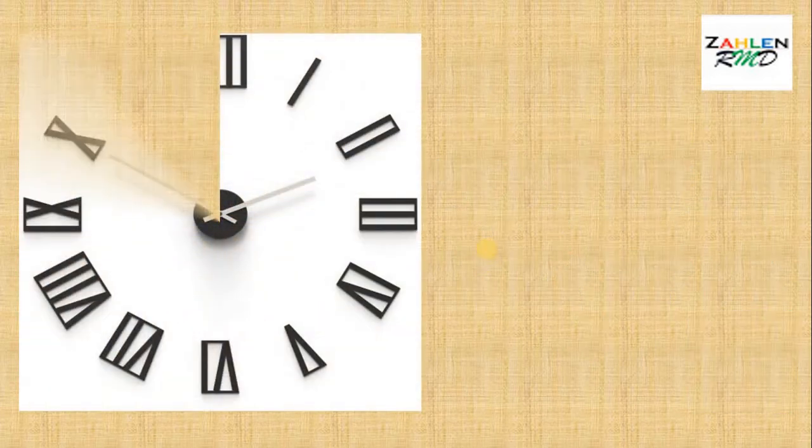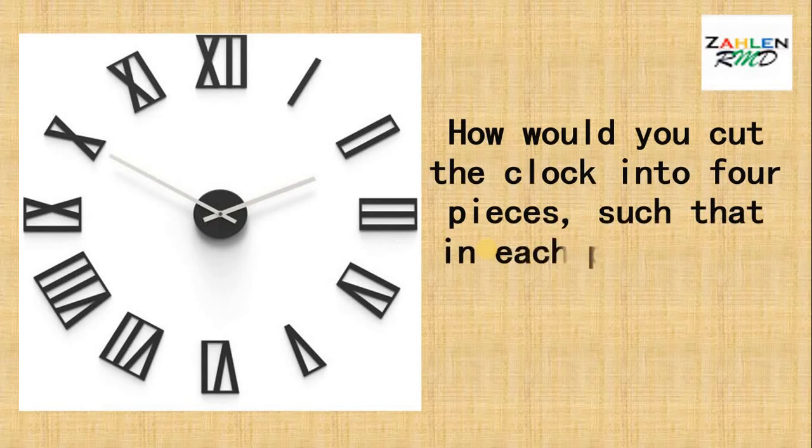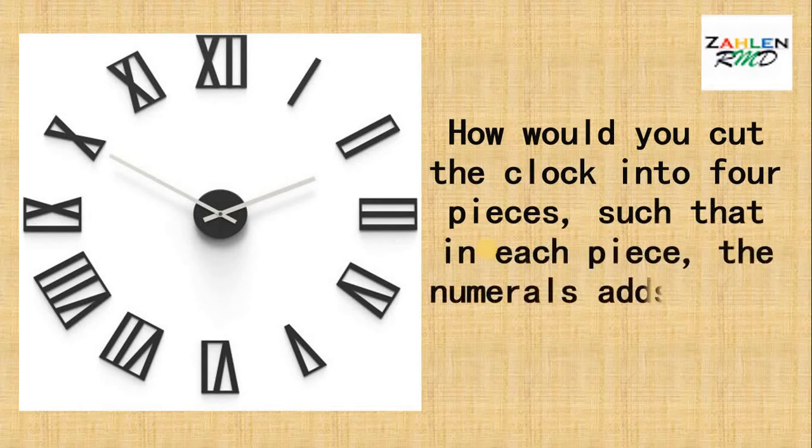Here's the question. How would you cut the clock into four pieces such that in each piece, the numerals adds up to 20?